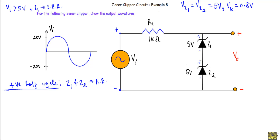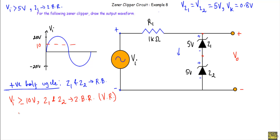However, the other Zener diode will not get sufficient voltage to operate in the breakdown region, so current flow during this positive cycle remains zero. As the input voltage keeps increasing, when Vi is greater than or equal to 10V, both Z1 and Z2 get sufficient voltage to operate in the Zener breakdown region. They will act as voltage regulators. As long as Vi is less than 10V, there is no current flow and Z1 and Z2 remain in the off state.